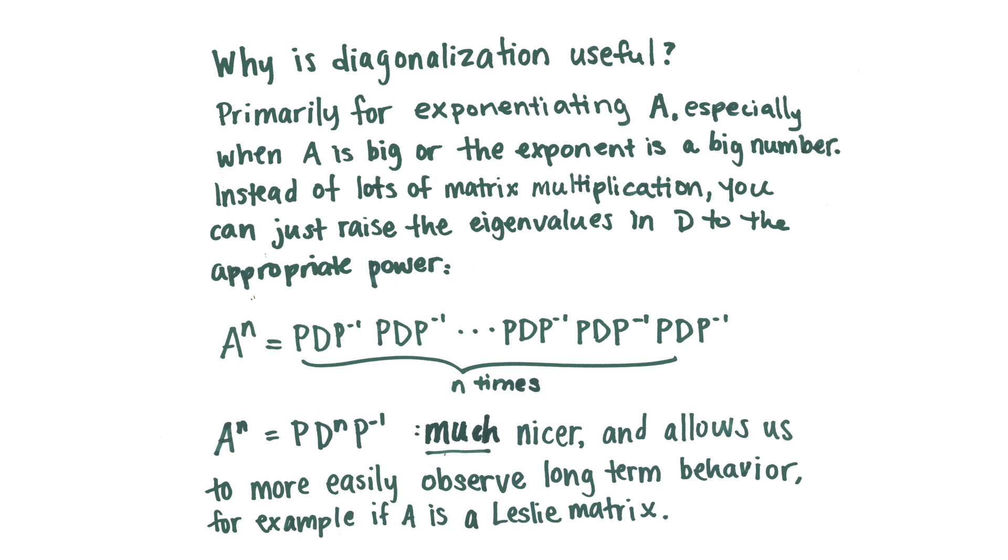The proof of this is you can write out all the PDP inverses and see that the P inverse times P cancels, and you just end up with the first P and the last P inverse and all of the D matrices multiplied together in the middle, n times. So A to the n equals P times D to the n times P inverse.